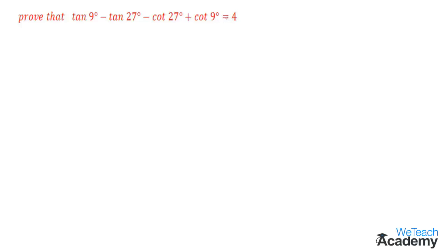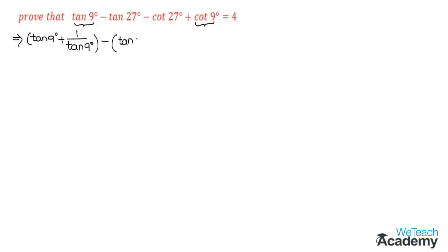In order to prove, let us consider the LHS and group tan 9 degrees and cot 9 degrees. By grouping we get tan 9 degrees plus cot 9, written in terms of tan as 1 by tan 9 degrees. Then minus is the common factor, so we group tan 27 degrees and cot 27 degrees, giving tan 27 degrees plus 1 by tan 27 degrees. Now let us take the LCM of both terms.